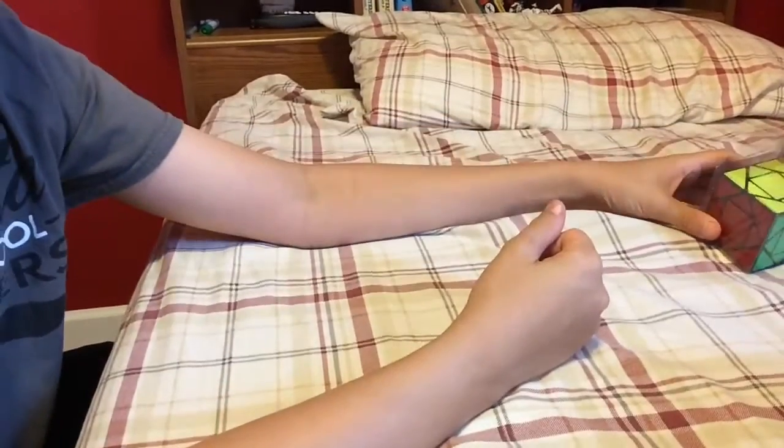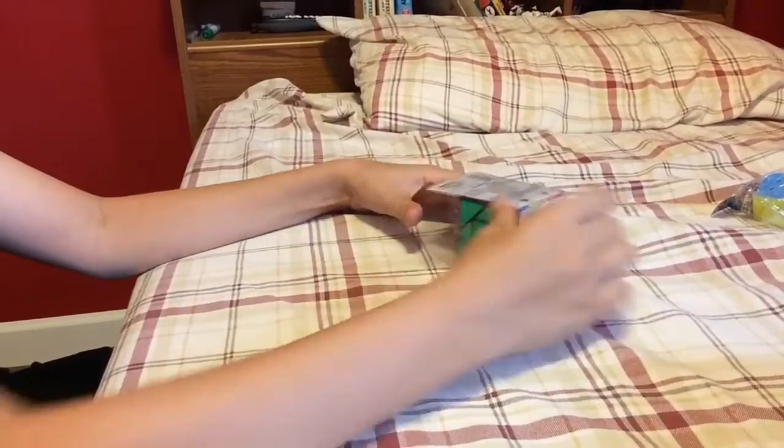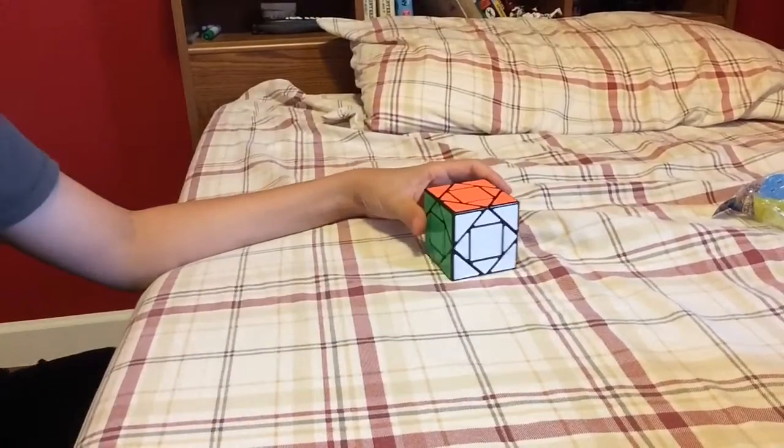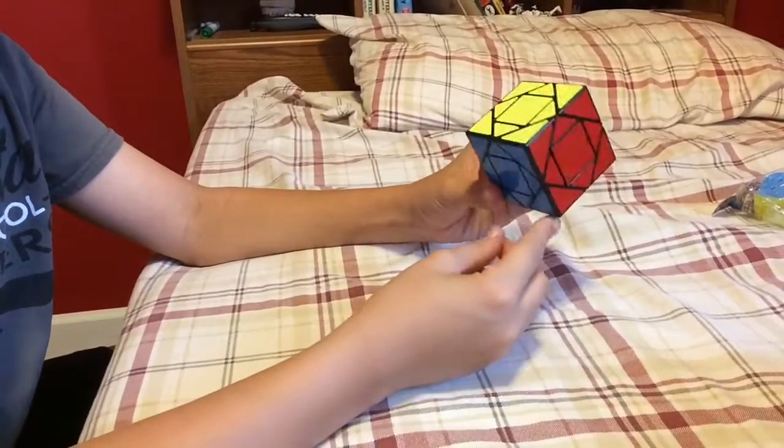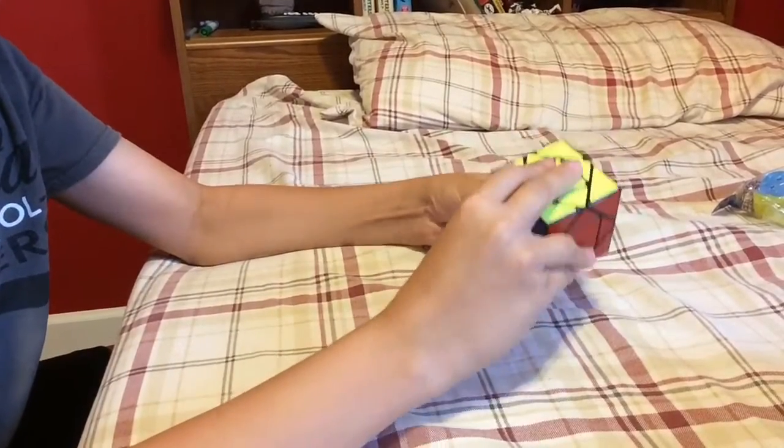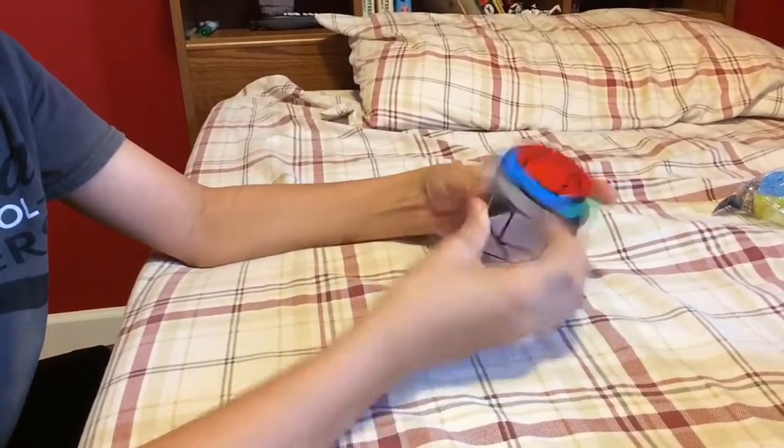Next up is the Mofeng Jiao Sheet Pandora Cube. Now this is interesting. I actually saw a review of this and decided to get it. It just looked really cool. So it looks like it should turn like a skewb. Like it should turn like that, but it won't. It's just a 3x3. That actually turns really good.